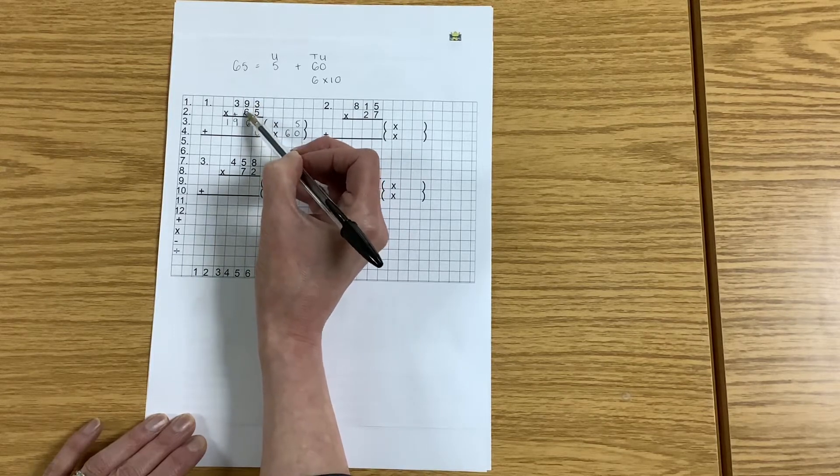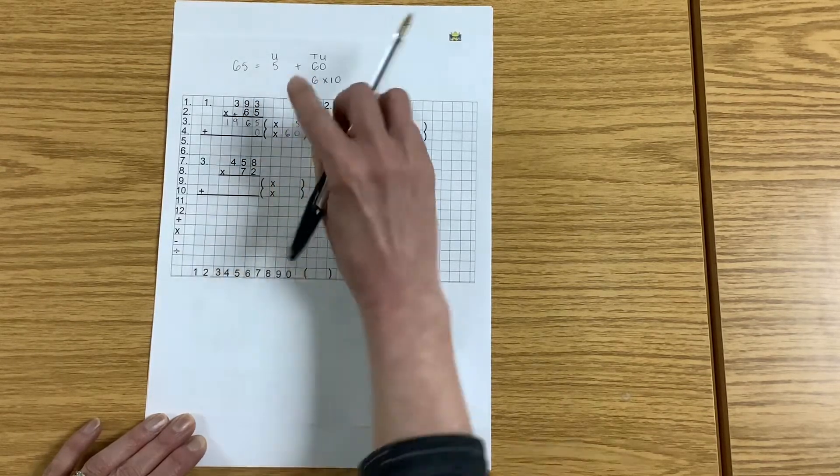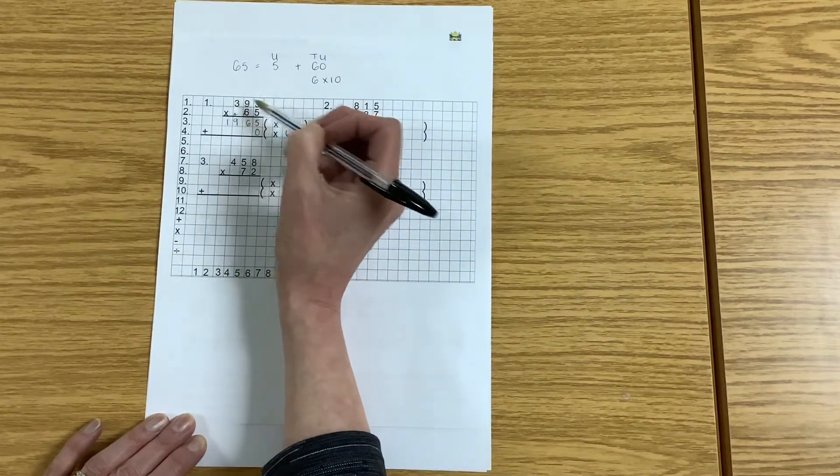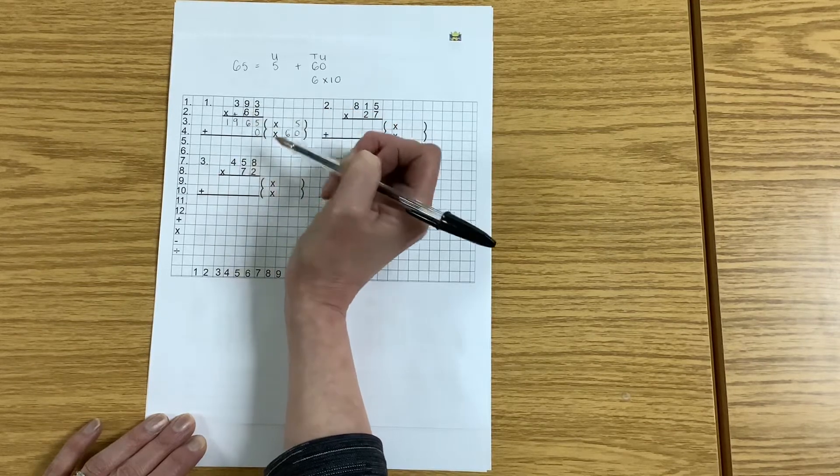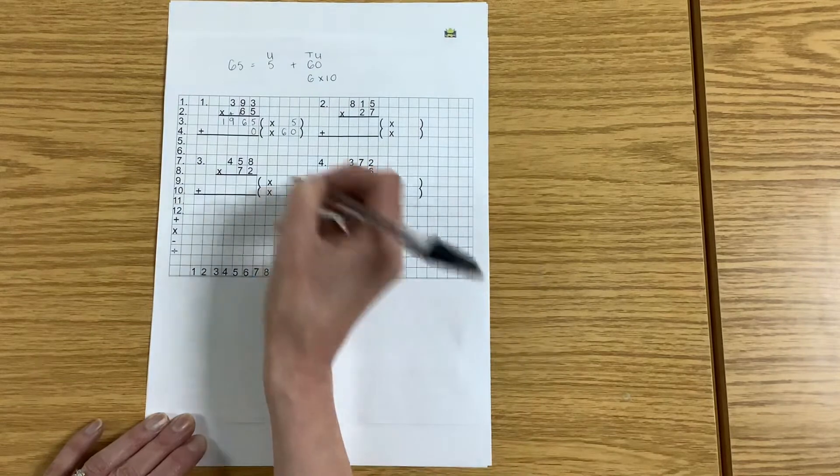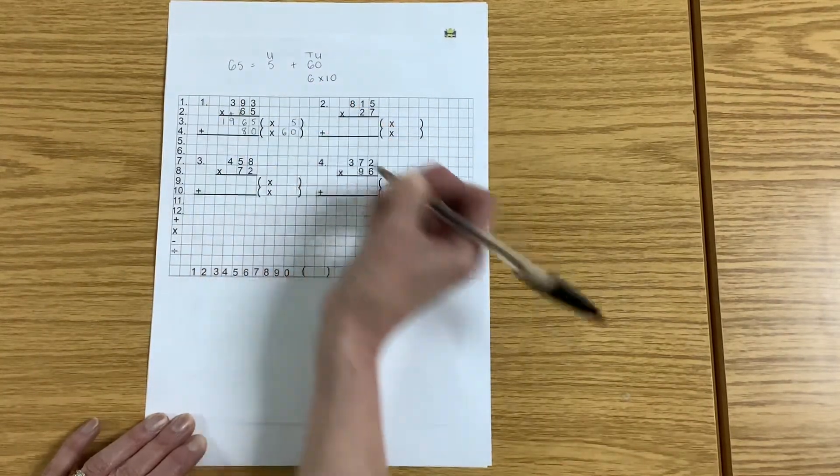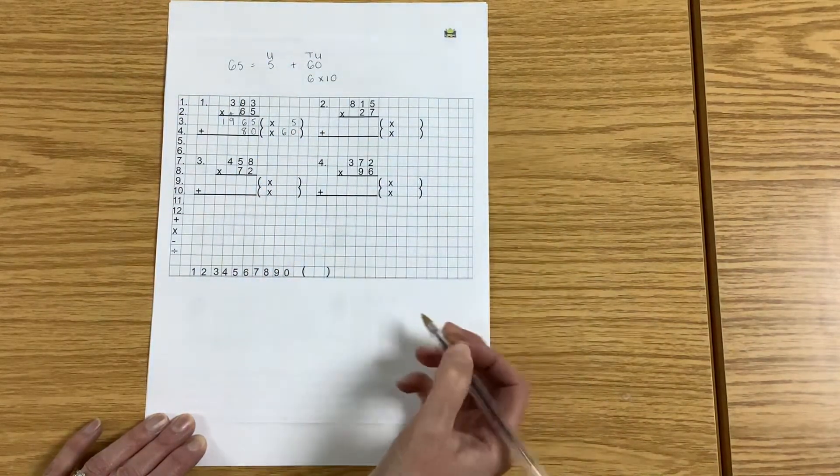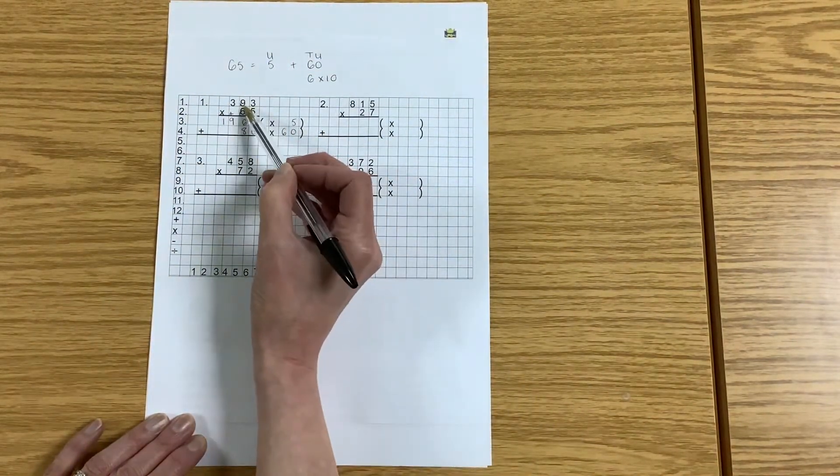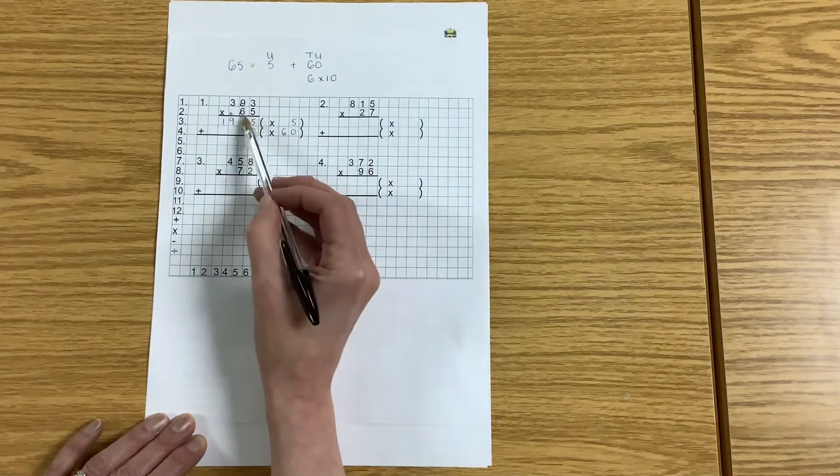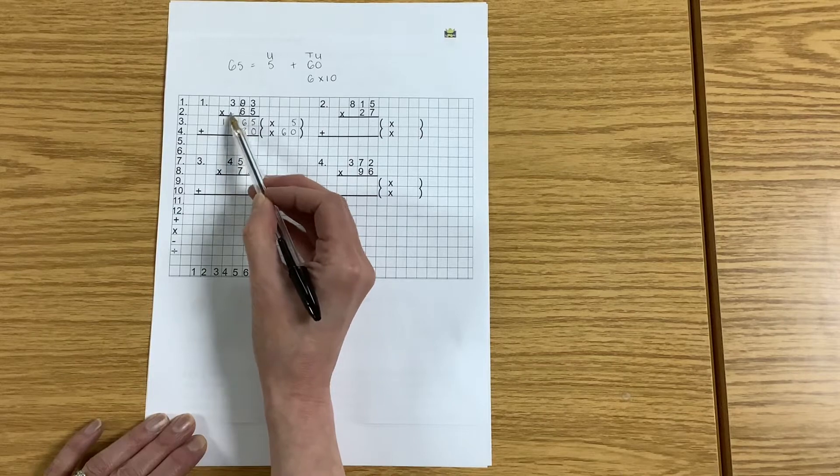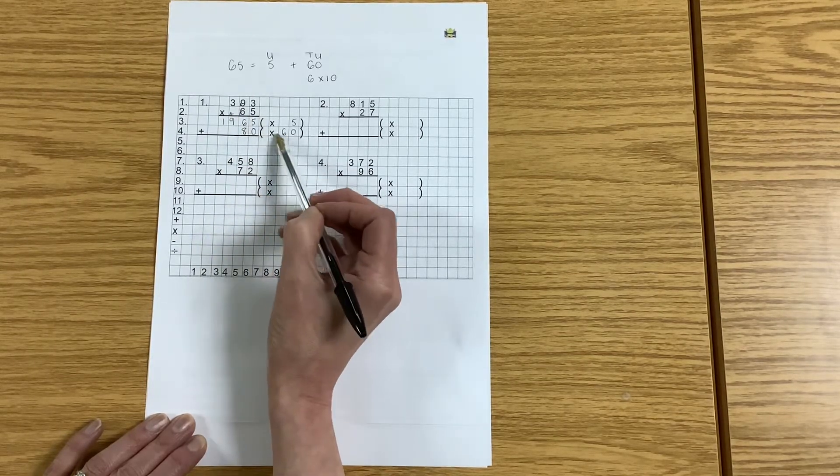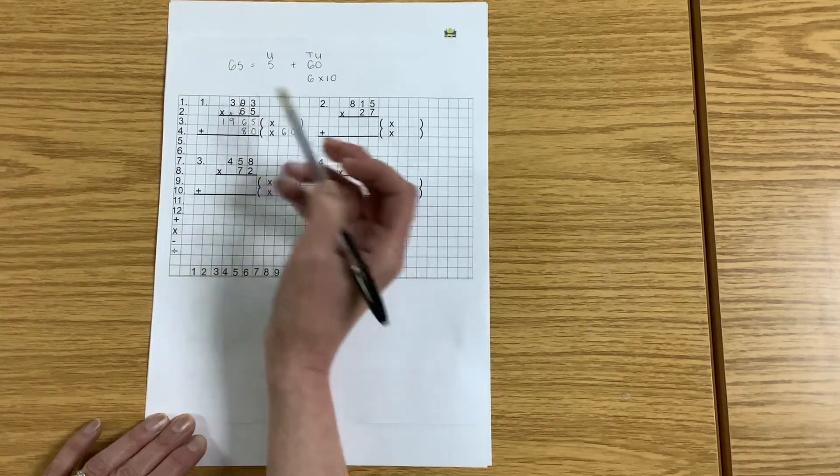So to multiply by 60, I begin by putting a 0 in the units column, then I'm going to multiply by the 6. I'm going to do 6 times 3, 6 times 9, 6 times 3. 6 times 3 is 18, so put down my 8. But where am I going to write that little 1? We write it up high beside the 9 because that's the next number we're multiplying by. When I'm multiplying by my groups of 10, the carried number goes up high.